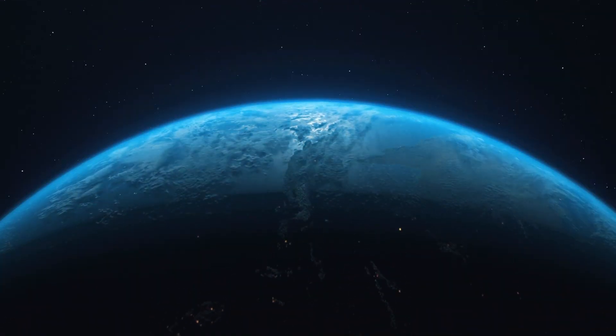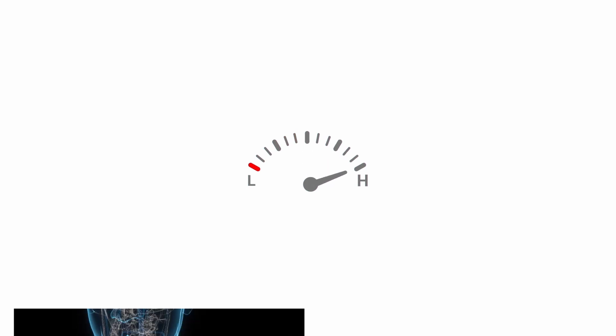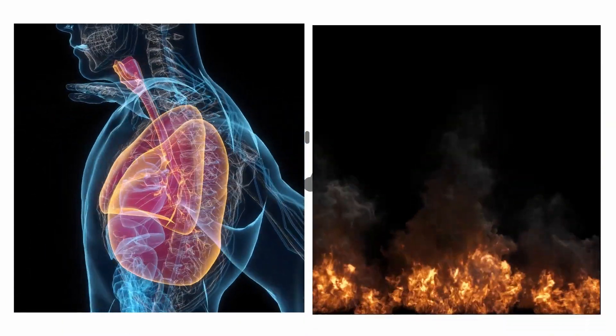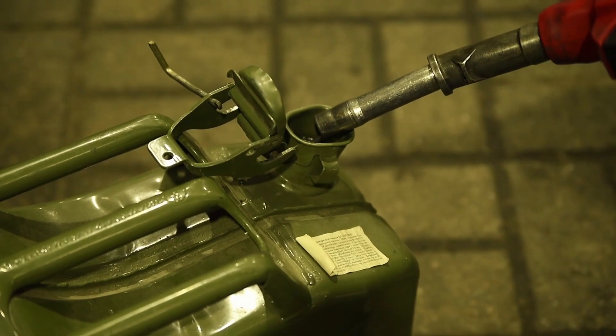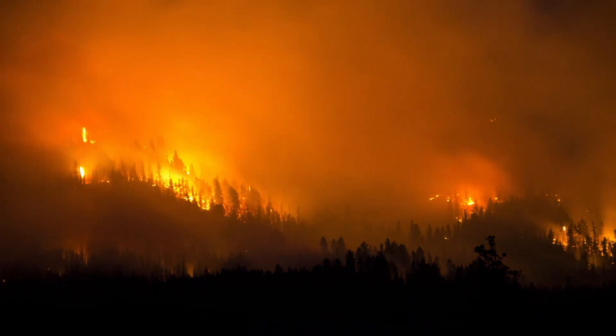In the event of doubling the oxygen levels on Earth, the most significant changes would be the speeding up of processes like respiration and combustion. With the presence of more fuel, i.e. oxygen, forest fires would become more massive and devastating.